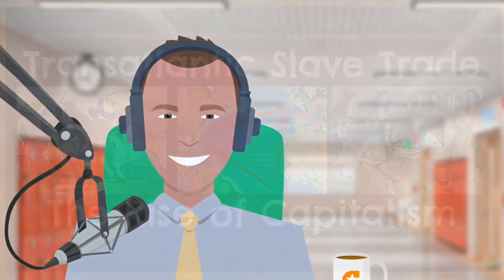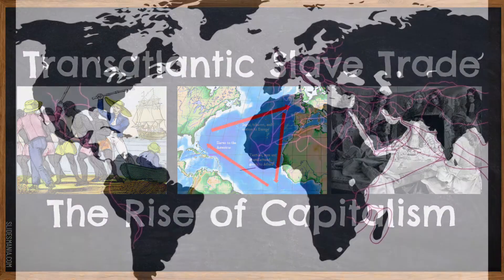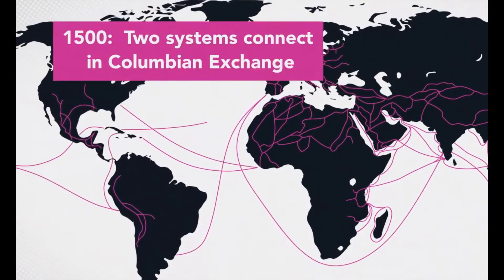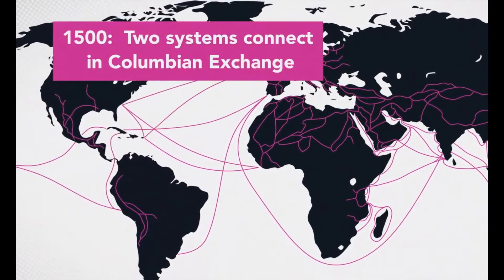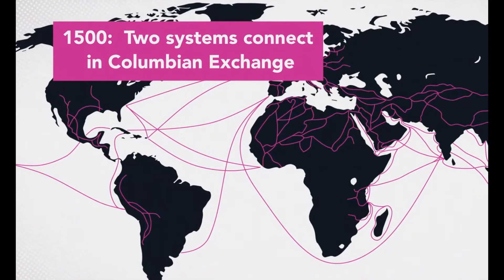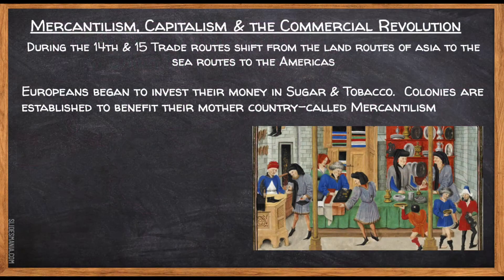Hello, young scholars. This is Mr. Martyrone with your flip classroom on the transatlantic slave trade and the rise of capitalism. As the Colombian exchange grew stronger, the increase in global trade led to the developments of new economic theories. The first of these theories was called mercantilism.